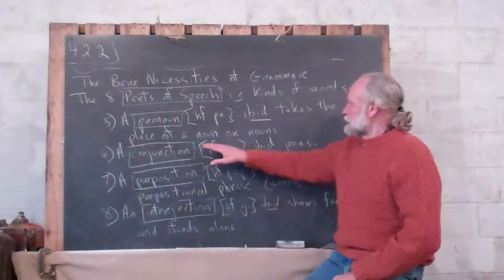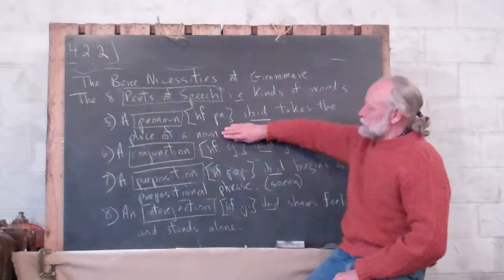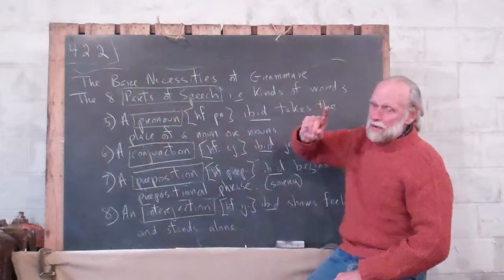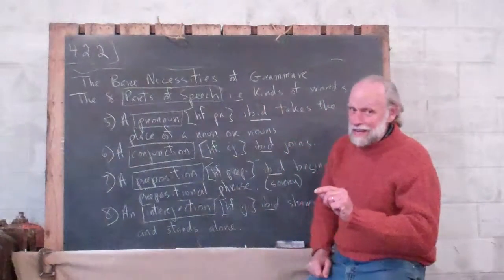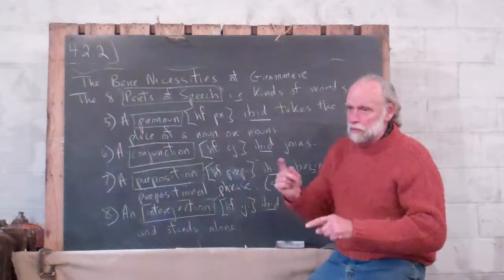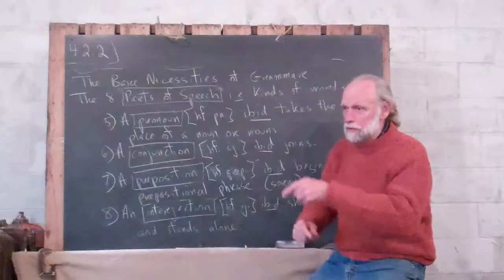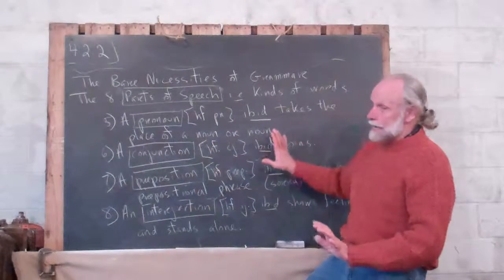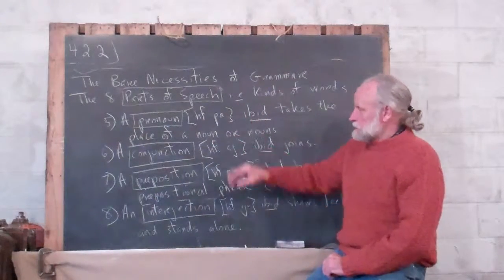So a pronoun is a word that takes the place of a noun. Now you could stop there. But the thing is, if you're really being careful, there are pronouns like they. They takes the place of more than one noun. The boy and the girl. They. So it could be nouns. It could be plural.